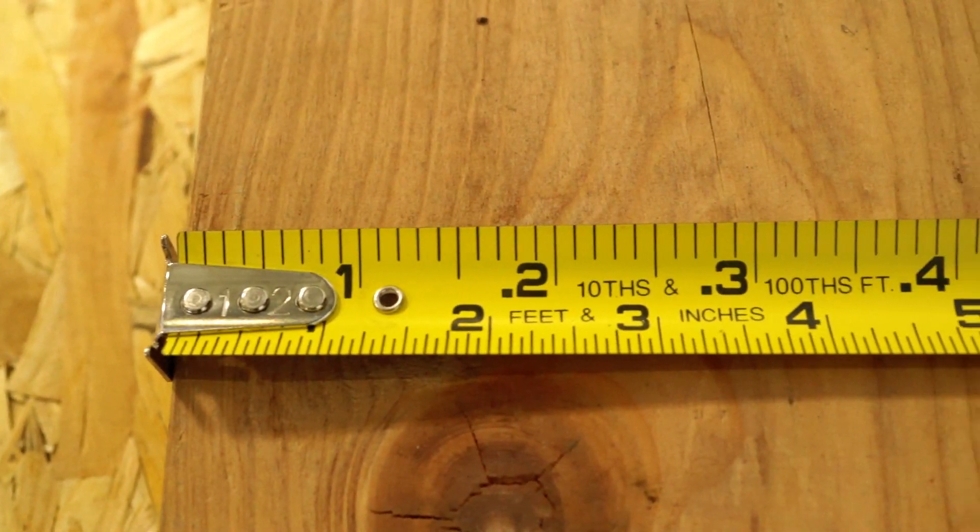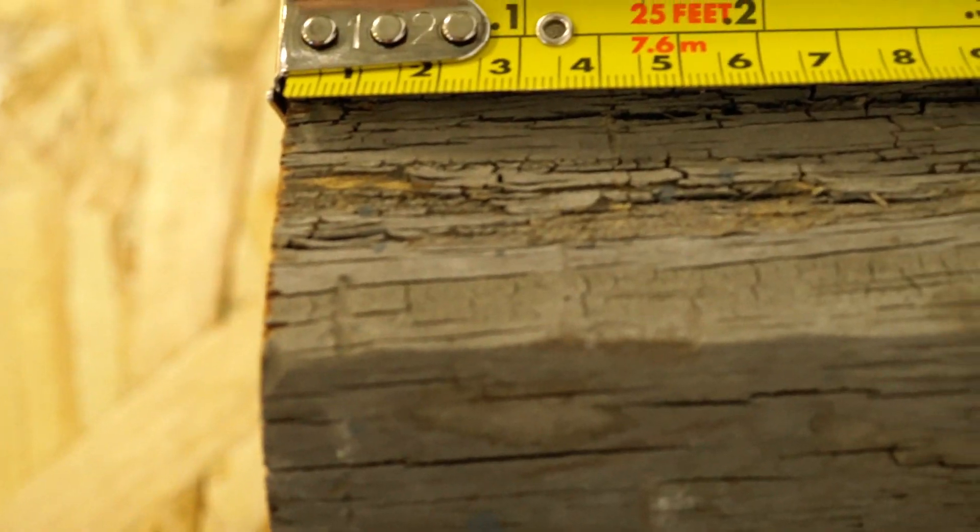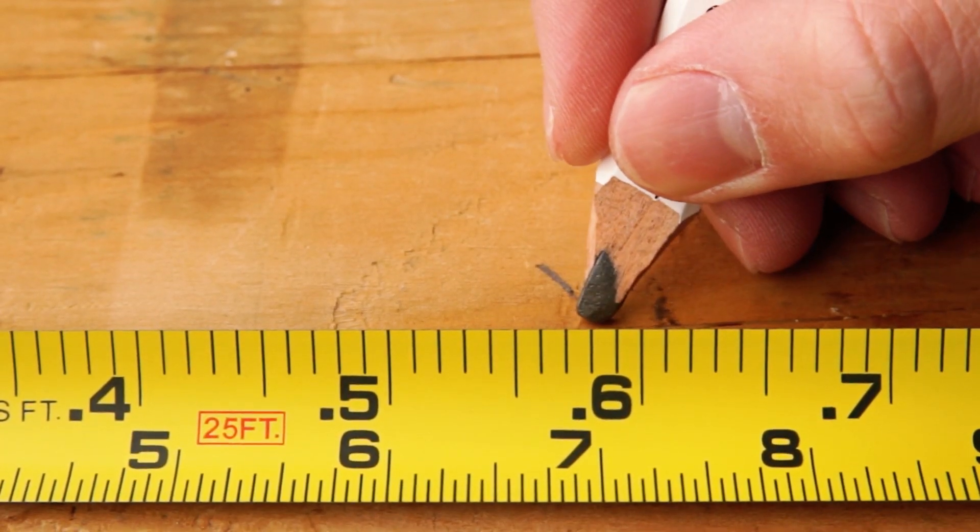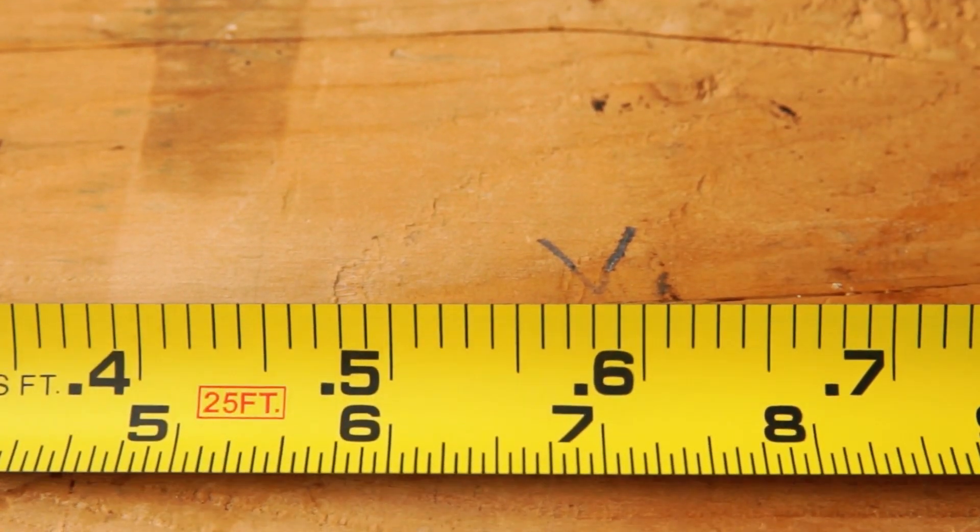We also have tapes that are available with two scales printed on one side of the blade. These are our dual scale measuring tapes. Our AutoLock dual scale blade offerings are feet in inches and engineer scales.